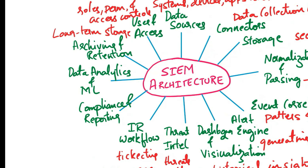In summary, a SIEM architecture combines data collection, storage, normalization, correlation, alerting, visualization, and other capabilities to provide a comprehensive solution for monitoring and managing an organization's security events and threats. Let's go to the next question: describe the role of data collection in a SIEM system.